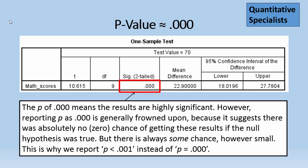This is why we typically report p is less than .001 instead of p is equal to .000.